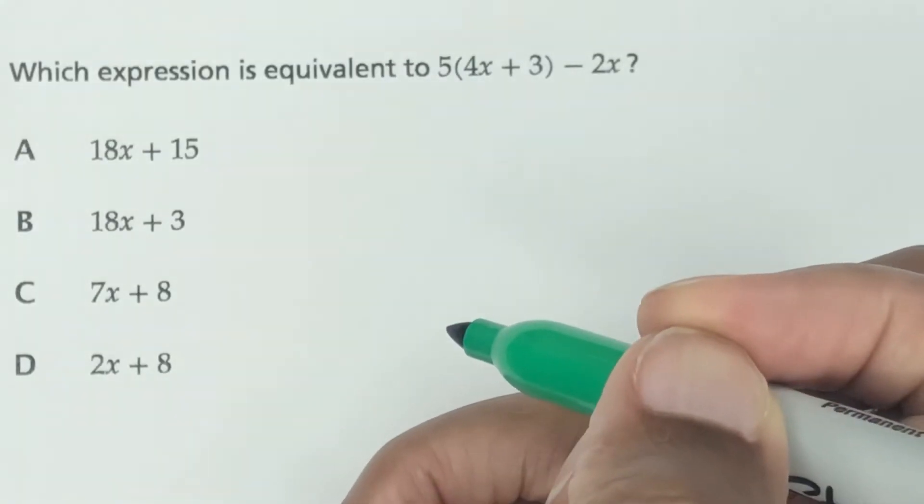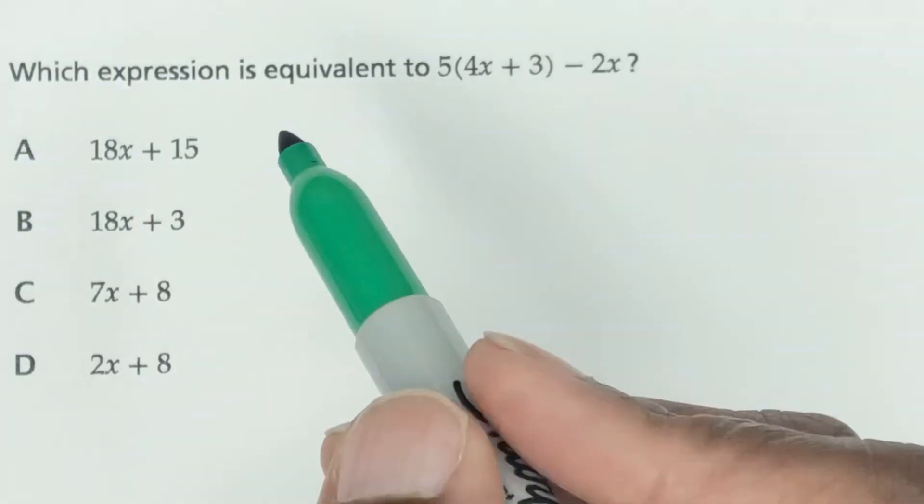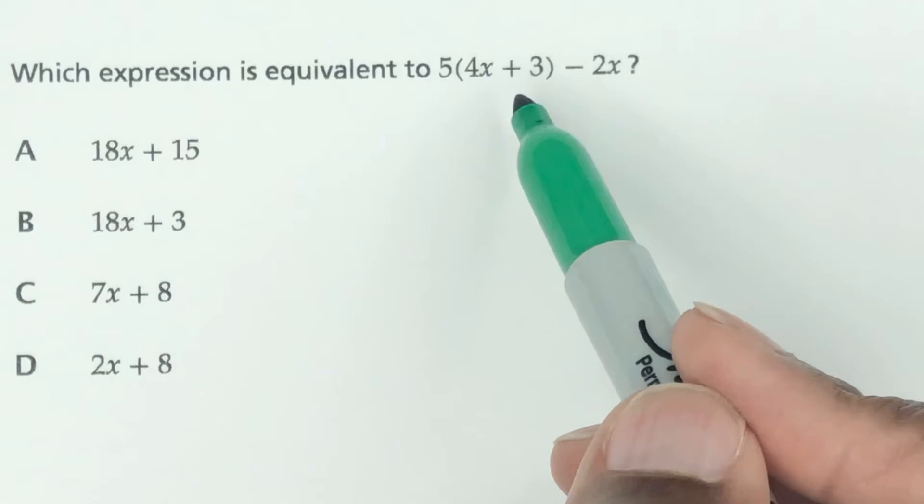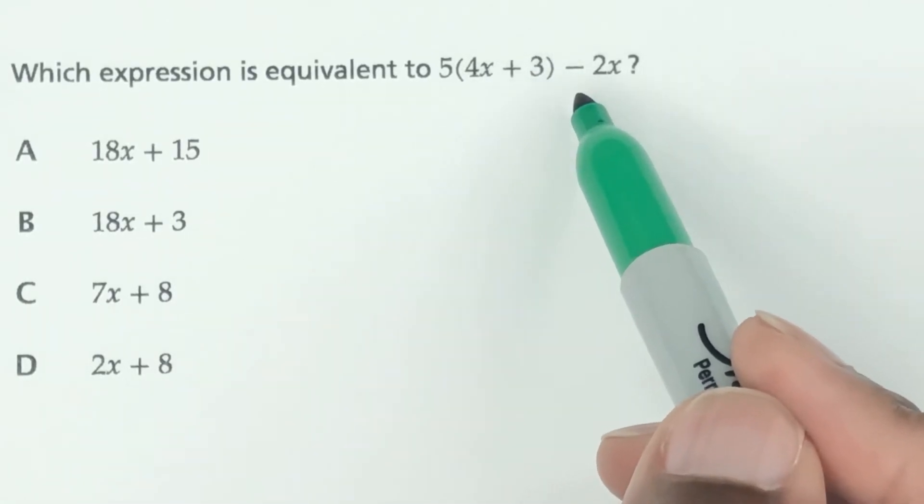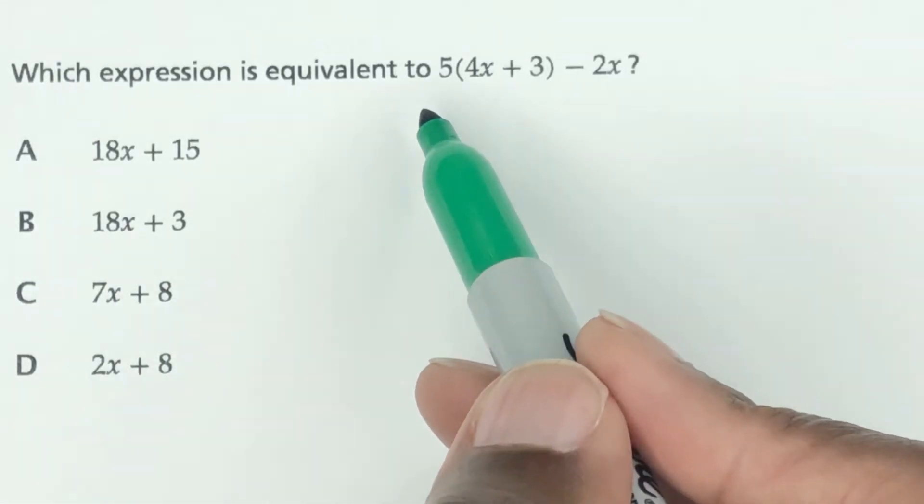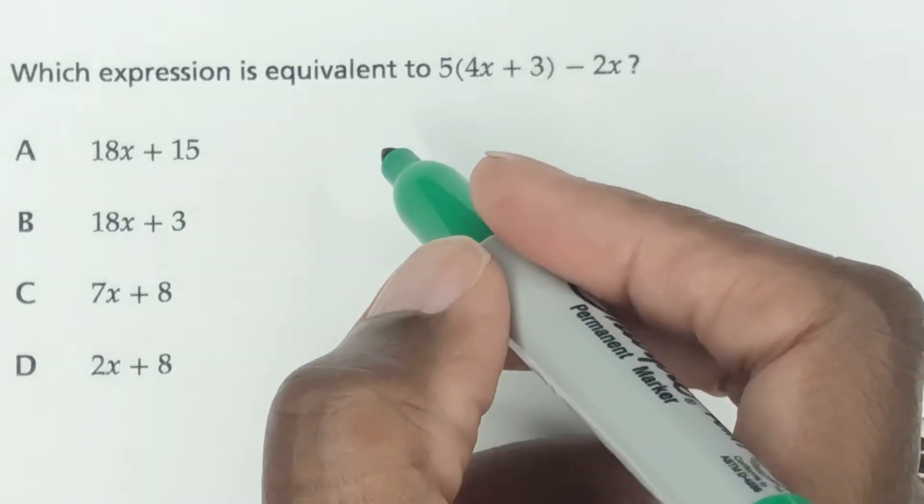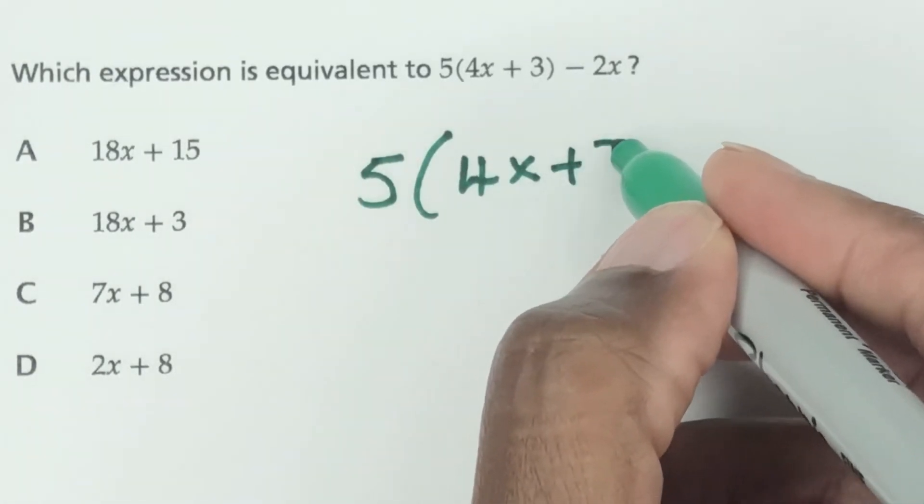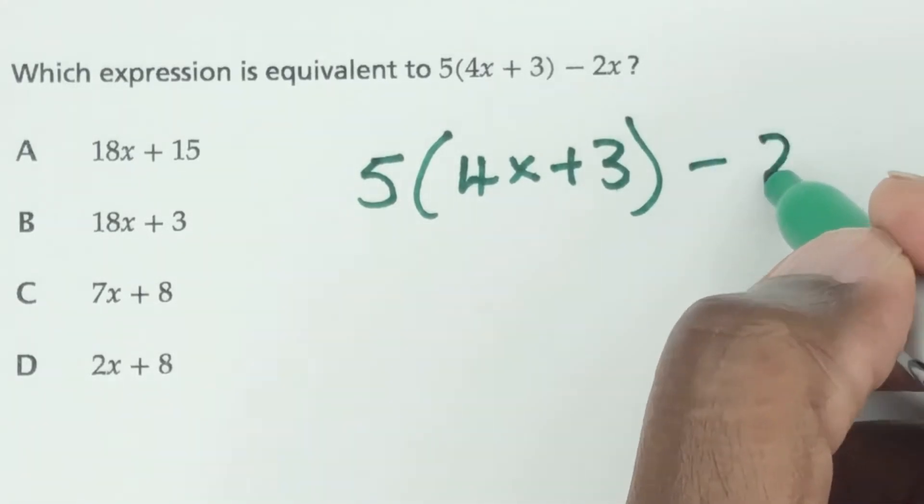Our first expression question is this one right here. Which expression is equivalent to 5(4x + 3) - 2x? So which one of these is equivalent to this? The first thing is we have to solve this. Let me write it again a little bigger so that I can show you all the steps of how to actually solve this question.